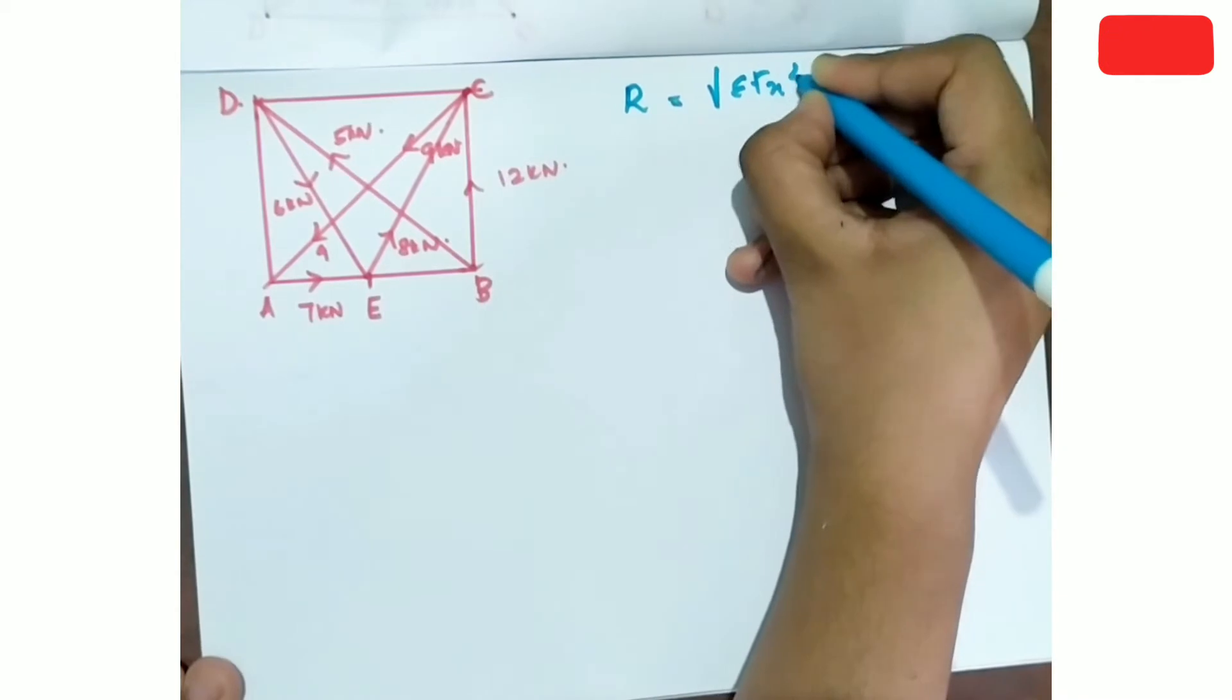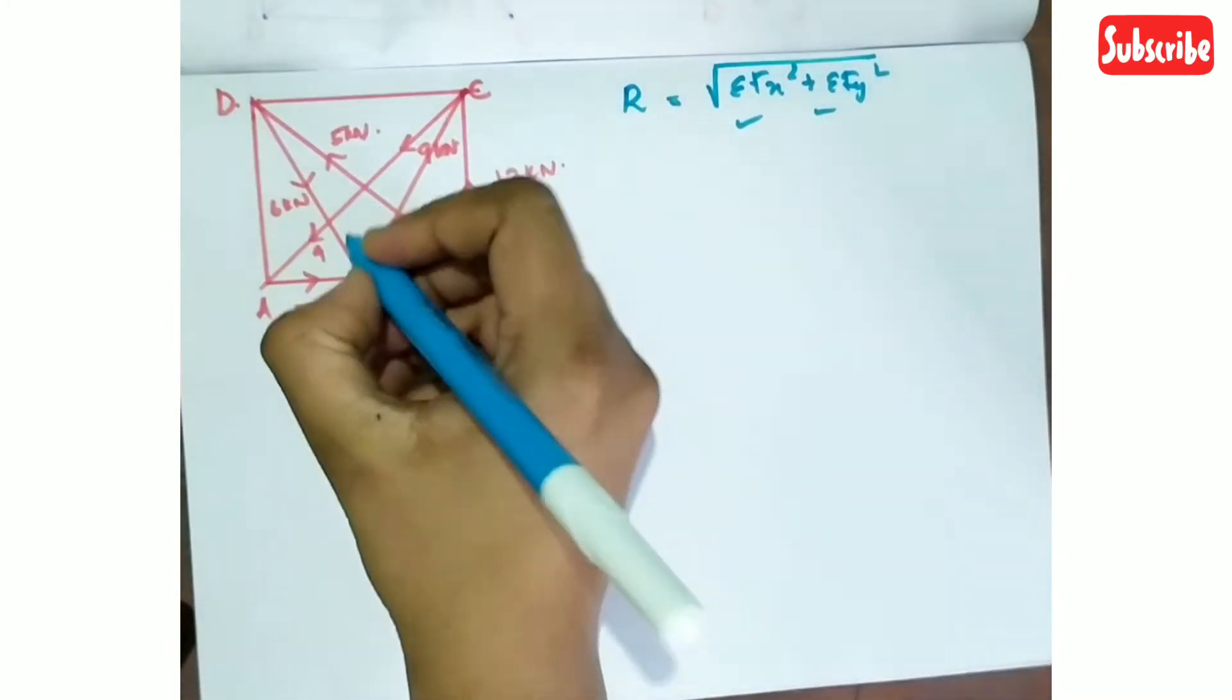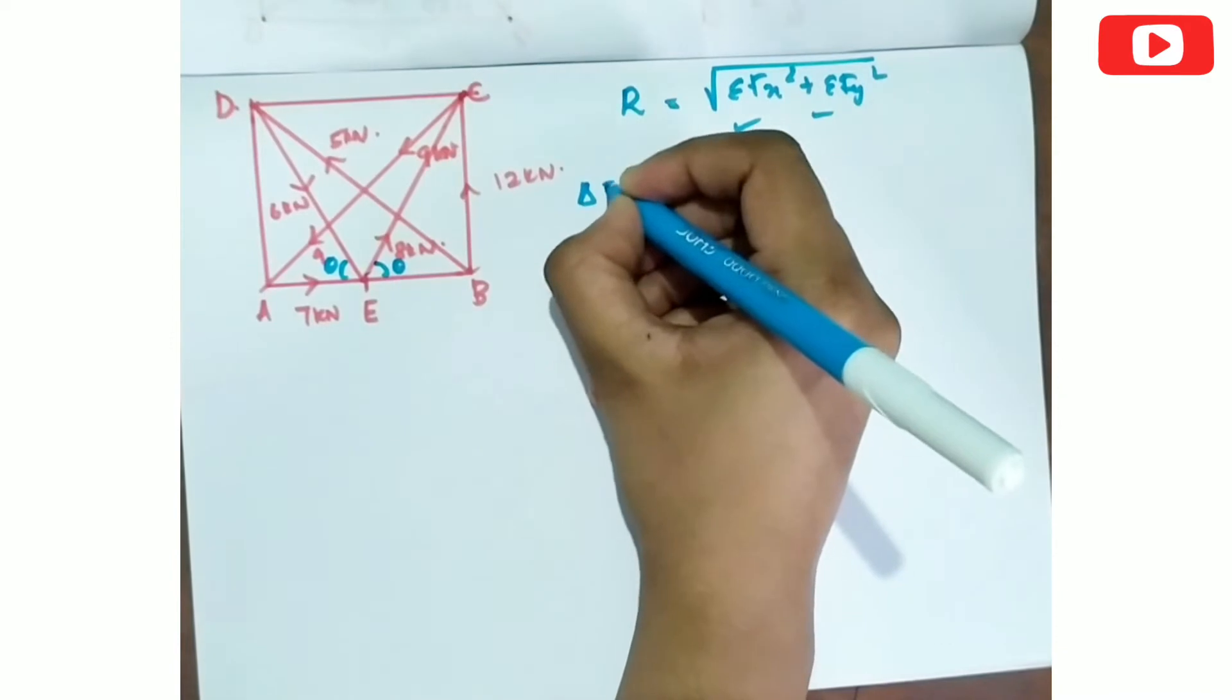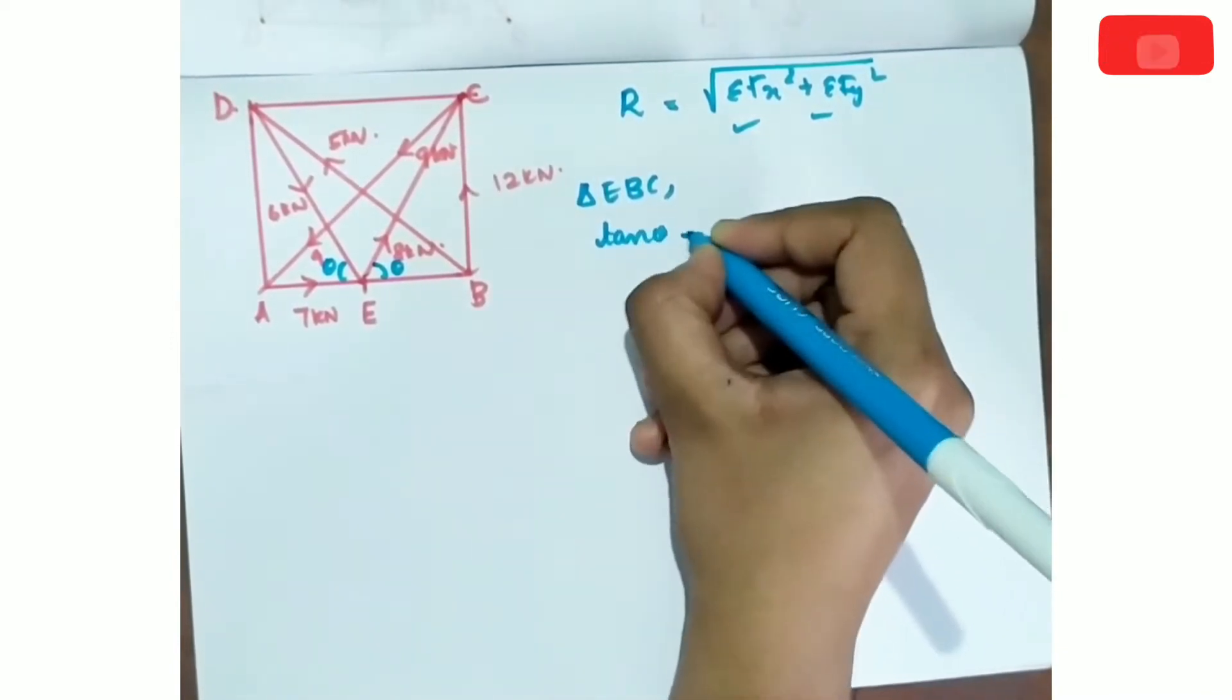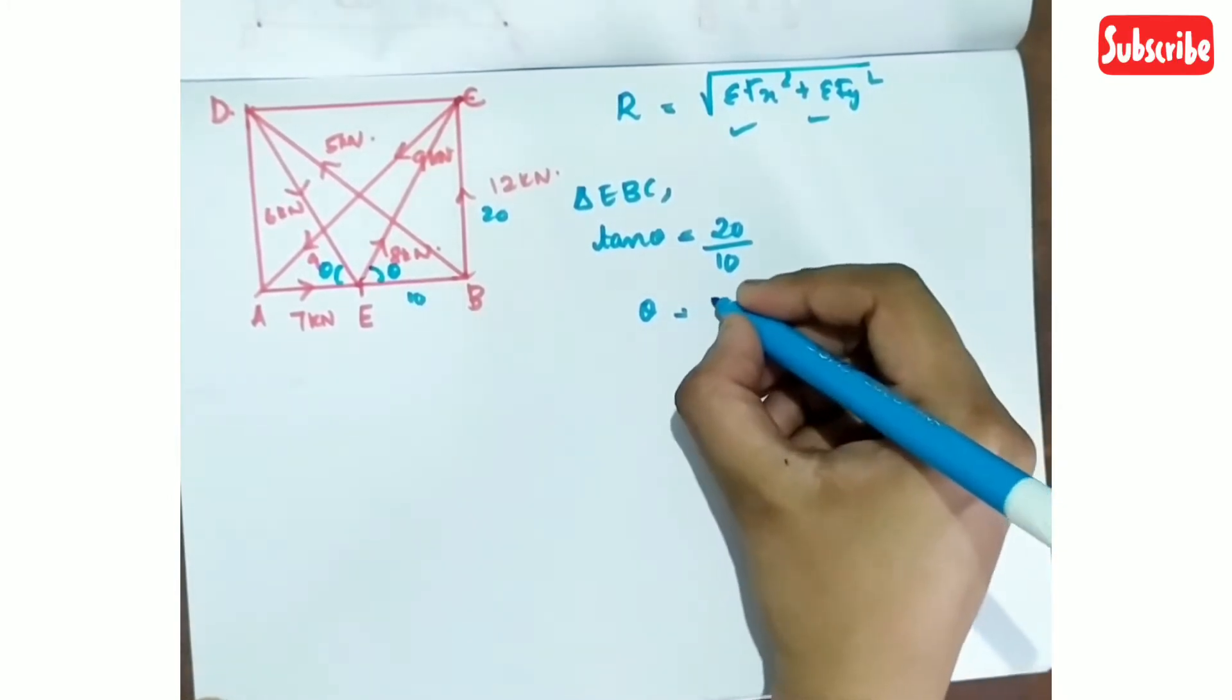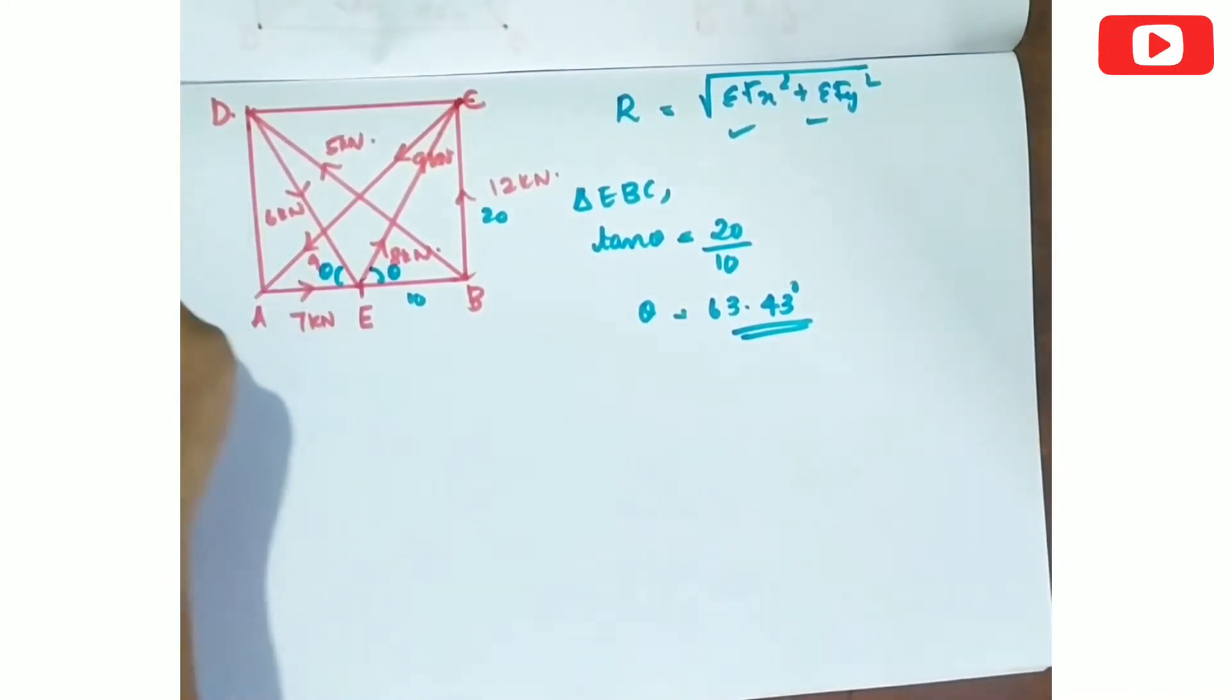The resultant force formula is R equals root of sigma Fx squared plus sigma Fy squared. For inclined forces, we use horizontal and vertical components. In triangle EBC with side 20 and EB as 10, tan theta equals 20 by 10, so theta equals 63.43 degrees.